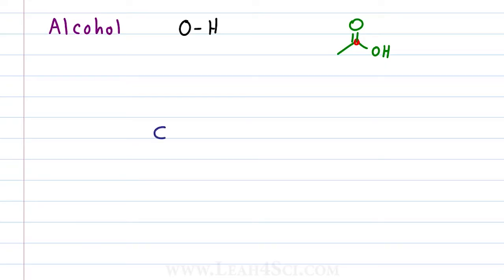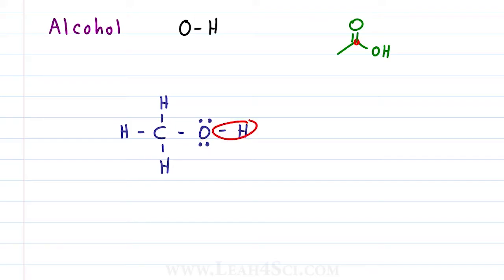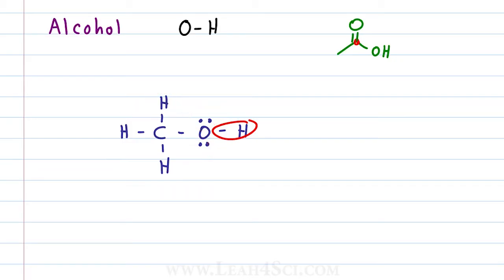Methanol is the smallest alcohol and it has a CH3 bound to an oxygen bound to a hydrogen. This is the simple Lewis structure so we can see all the bonds and atoms. The oxygen atom has four groups attached to it: the hydrogen, the methyl group, and two lone pairs. Four groups means that it's sp3 hybridized.